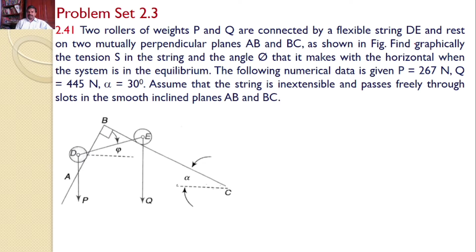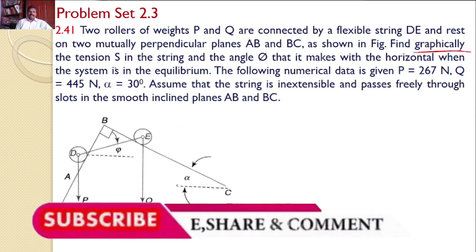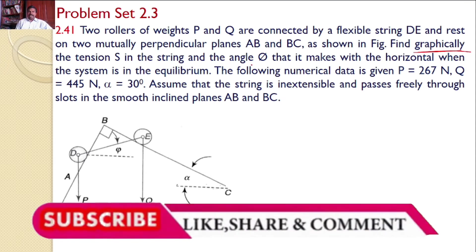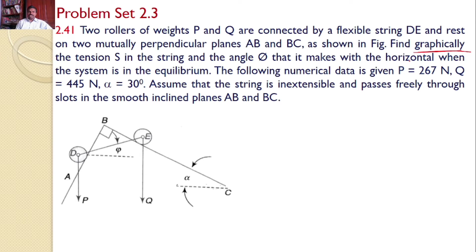Find graphically the tension S in the string and the angle phi that it makes with the horizontal when the system is in equilibrium. Given data: P is equal to 267 N, Q is equal to 445 N, and alpha is equal to 30 degrees. Assume that the string is inextensible and passes freely through slots in the smooth inclined planes AB and BC.